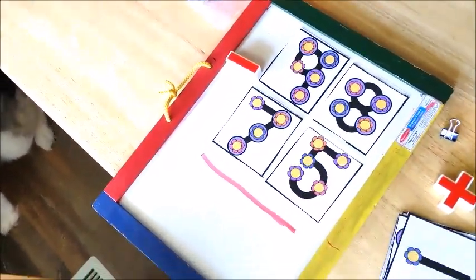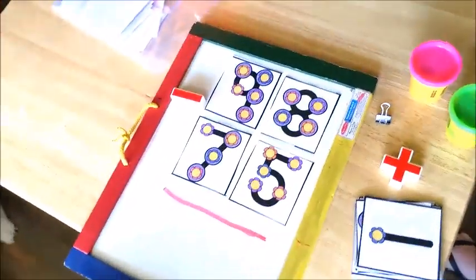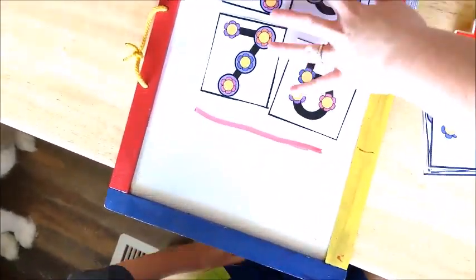All right, so we have 98 minus 75. You're going to start with your ones place and do eight minus five.